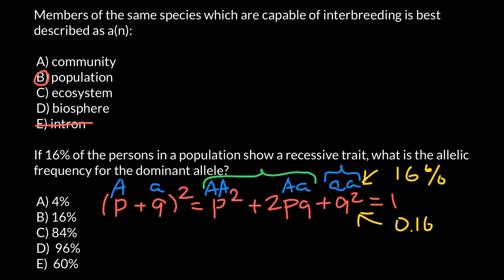If we know that Q squared equals 0.16, we can find Q. We just have to take the square root from both sides.